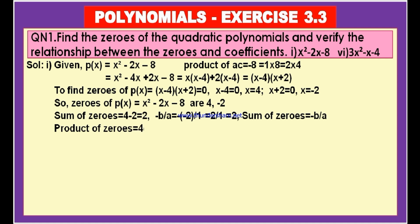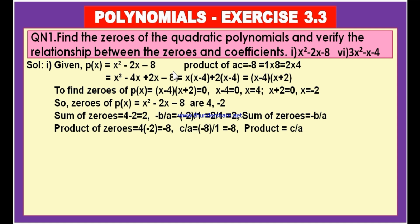Now let us find the product of the zeros. One zero is 4 and the second zero is minus 2, so 4 into minus 2 is minus 8. Let us find C by A: C value is minus 8 and A value is 1, so minus 8 by 1 equals minus 8. These two values are equal, therefore the product of zeros is equal to C by A.